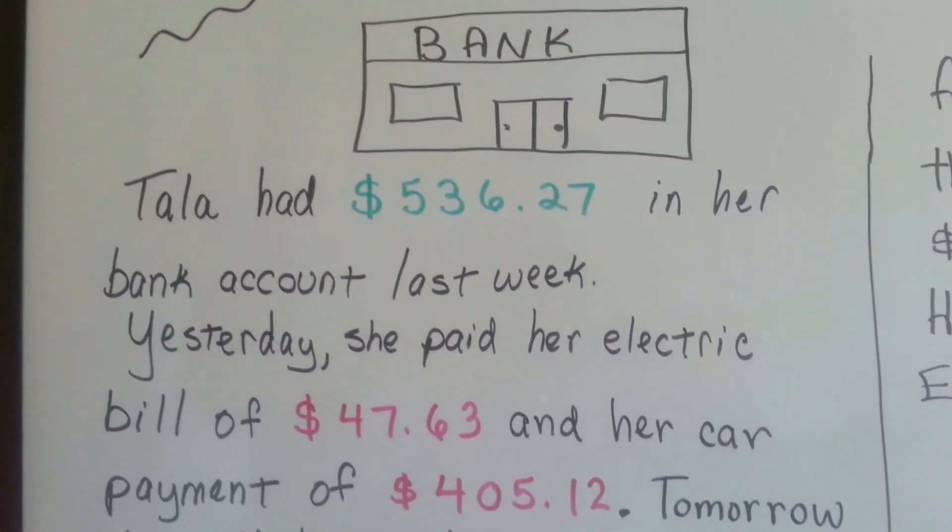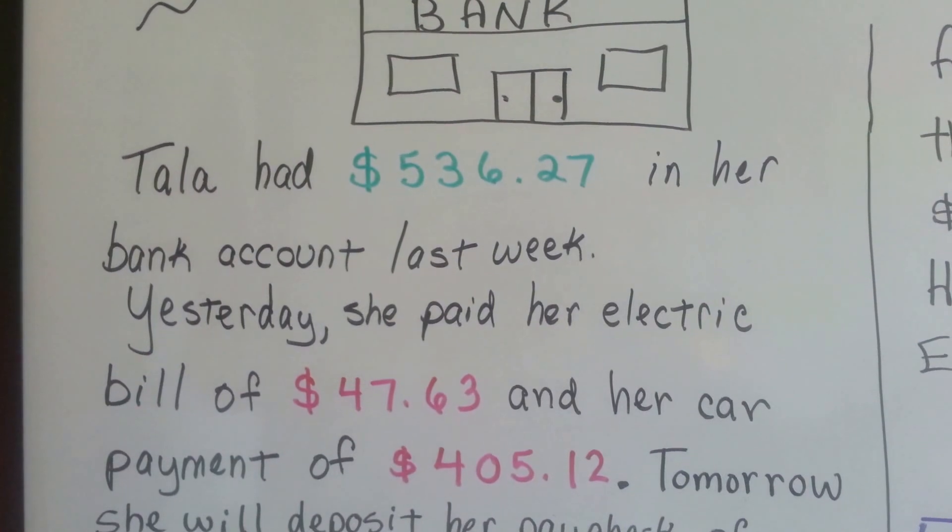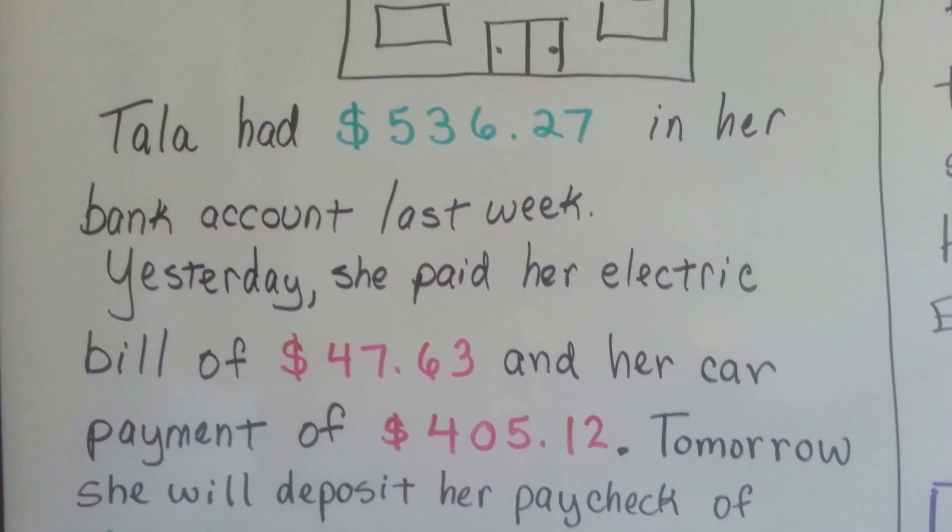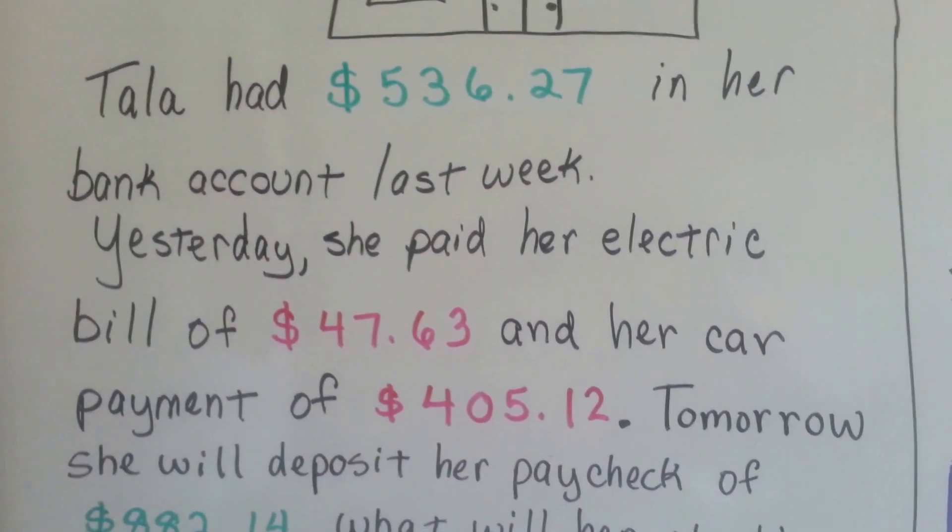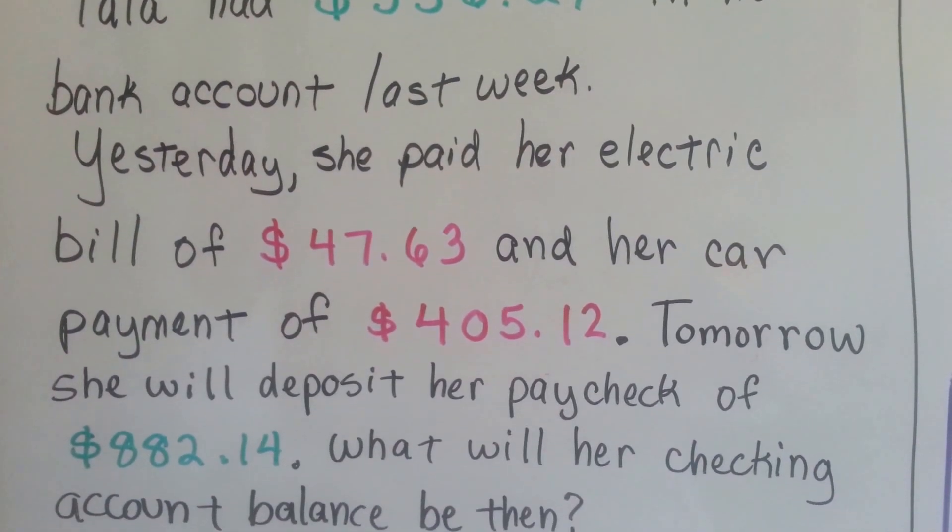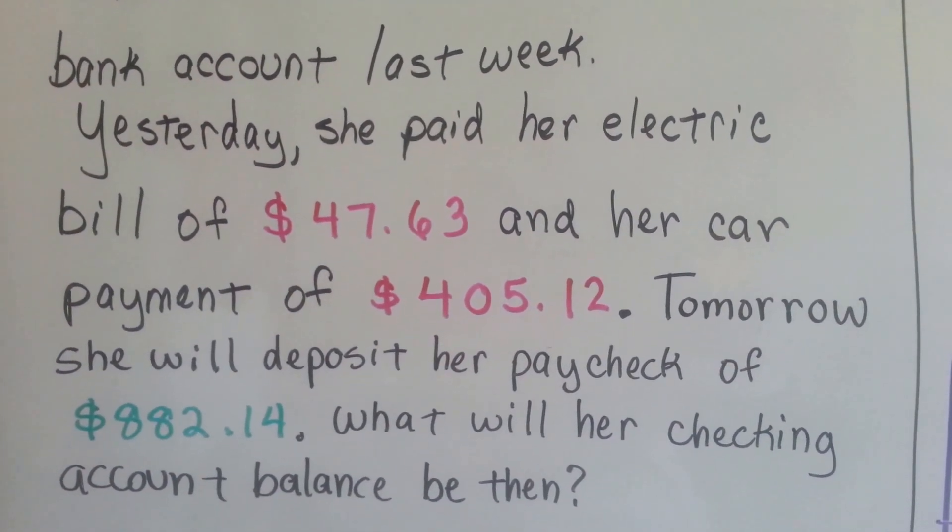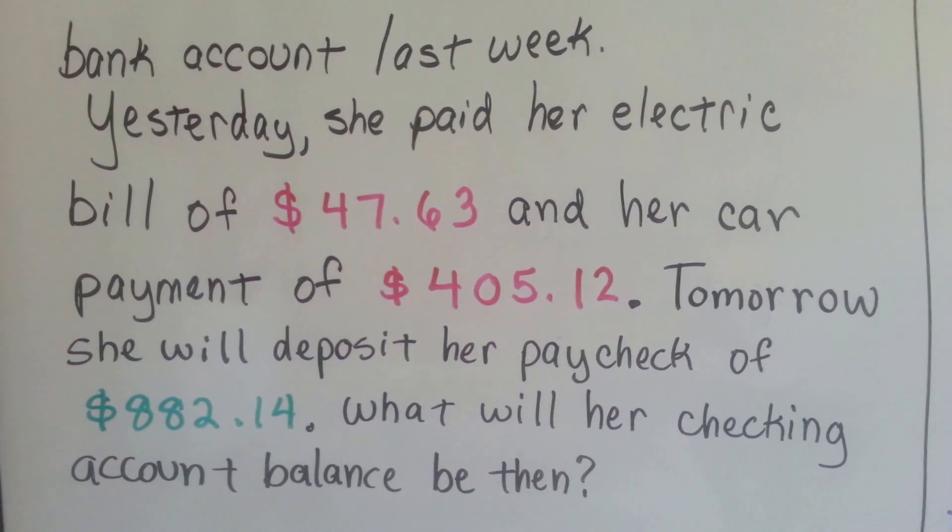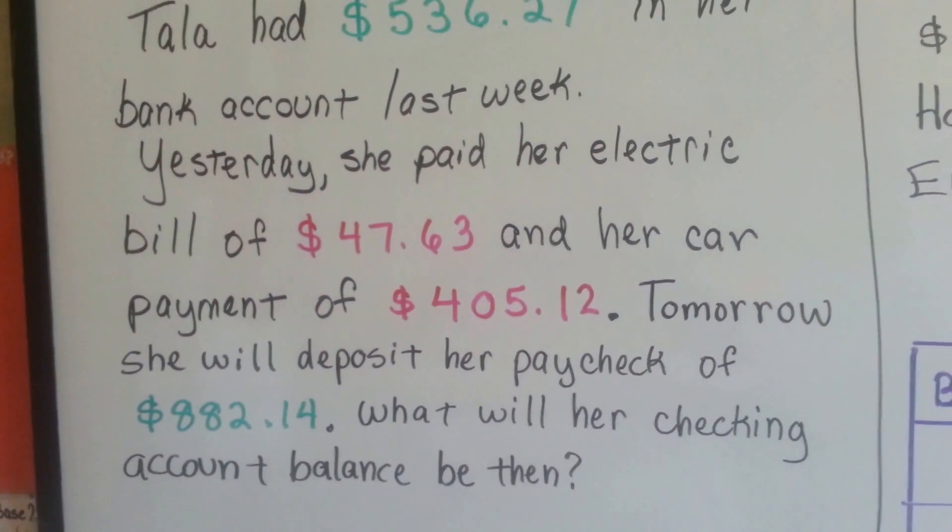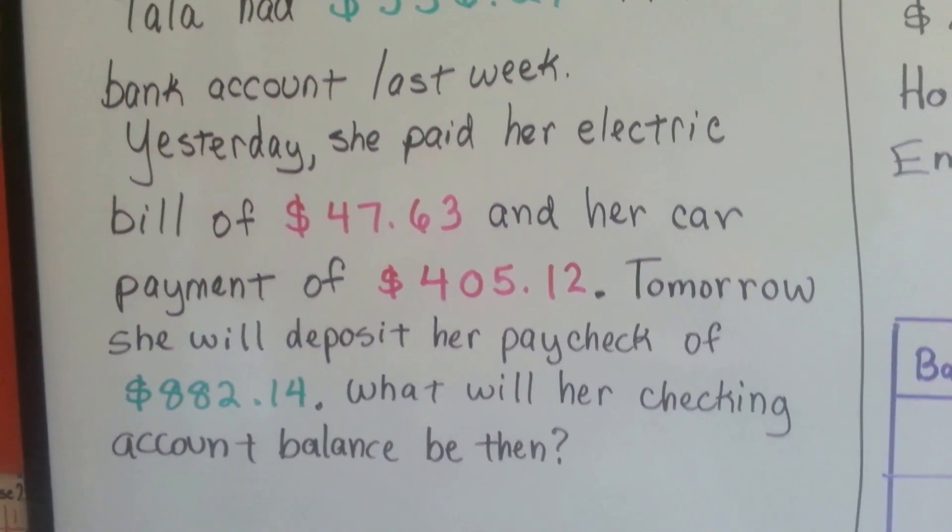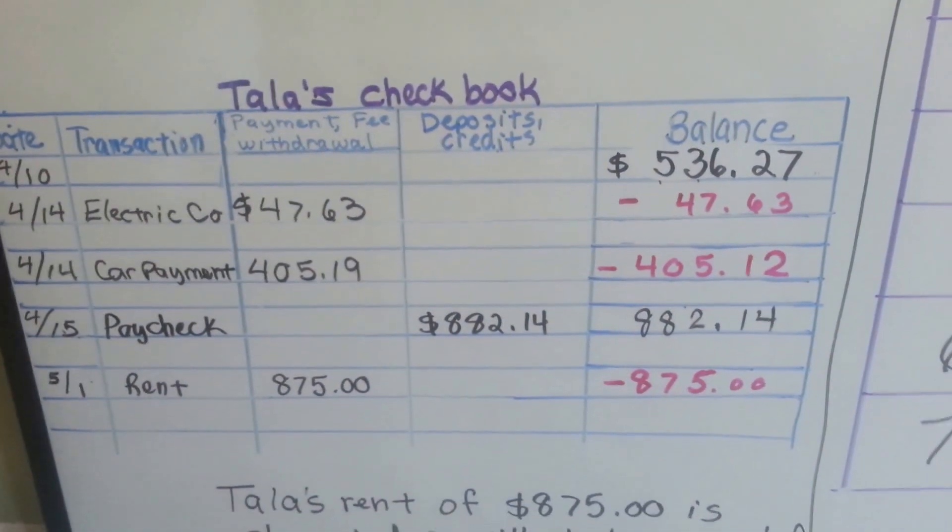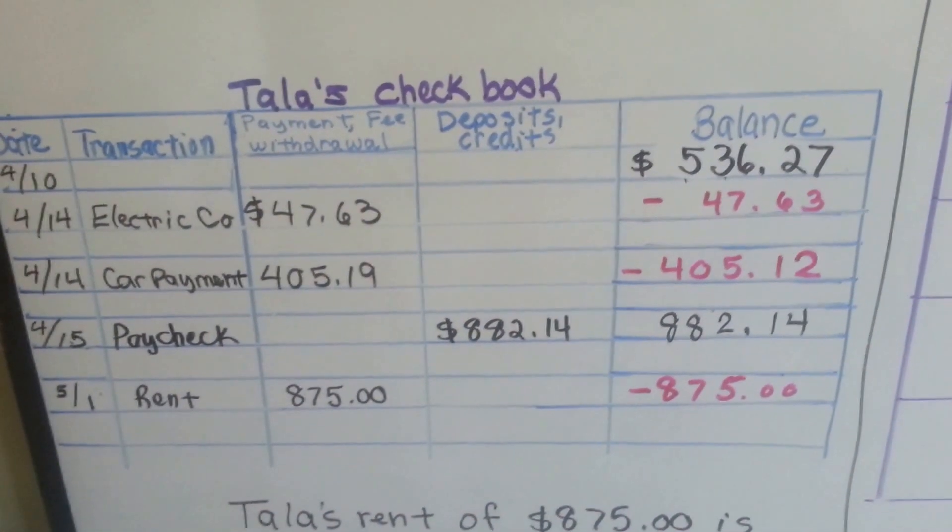Tala had $536.27 in her bank account last week. Yesterday, she paid her electric bill of $47.63 and her car payment of $405.12. Tomorrow she will deposit her paycheck of $882.14. What will her checking account balance be then? Well, that's a lot of information. If we make a table that looks like the balance section of a checkbook, it'll help us figure it out.